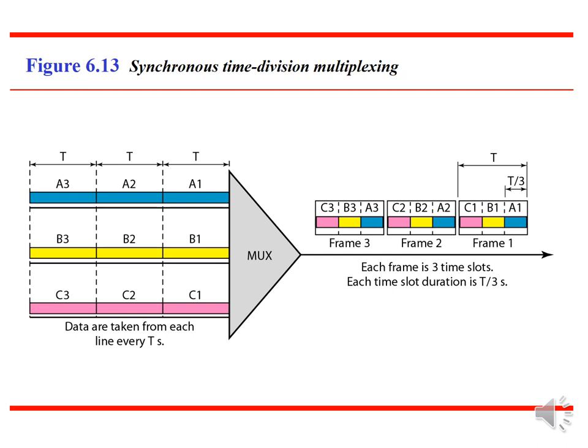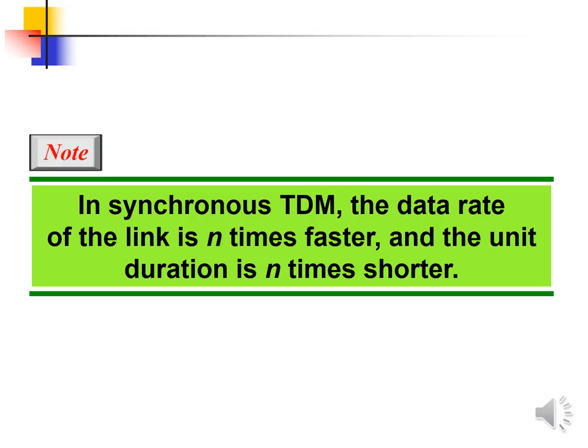In the diagram, we can observe that we construct different frames: frame 1, frame 2, and frame 3. Frame 1 is constructed by combining a1, b1, and c1. Frame 2 is constructed by combining a2, b2, and c2. Frame 3 is constructed by combining a3, b3, and c3. In synchronous TDM, the data rate of the link is n times faster and the unit duration is n times shorter.